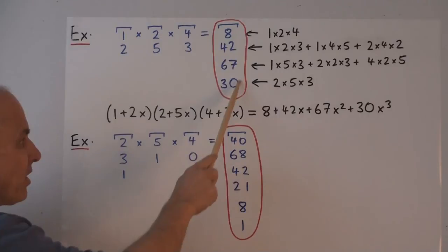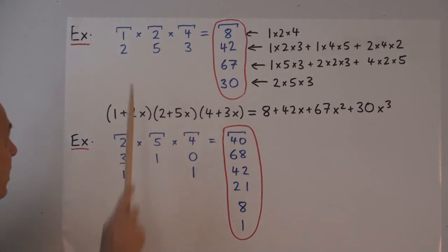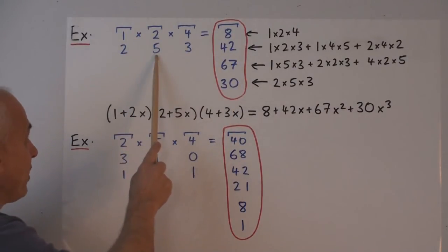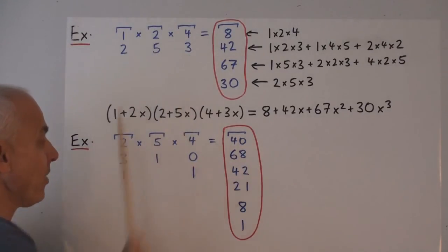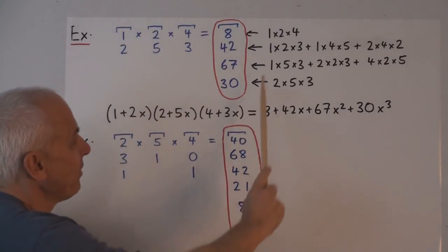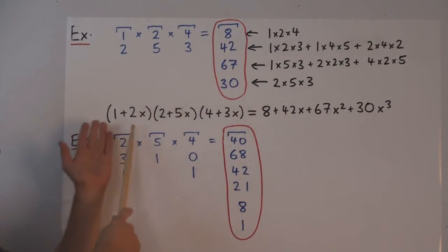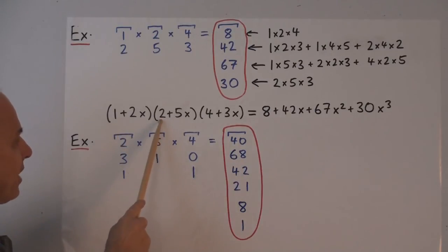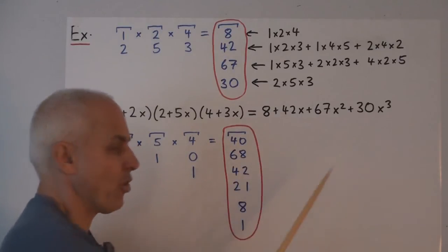And finally, the degree three term, there's only one way of getting a degree three term. Is to take the degree one term, times the degree one term, times the degree one term. And this product that we've just done corresponds to the usual kind of polynomial product. Multiplying one plus two x, times two plus five x, times four plus three x. And we're getting that polynomial there.